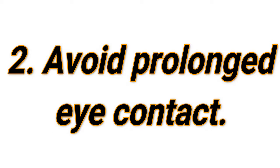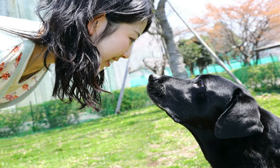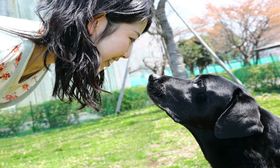To avoid prolonged eye contact, look to one side of the dog rather than staring it down. Dogs consider this to be a sign of domination — they interpret it as a kind of challenge and it can cause the dog to think you want to fight. In general, prolonged eye contact might also anger or scare the dog.